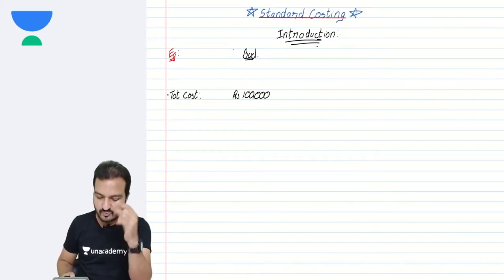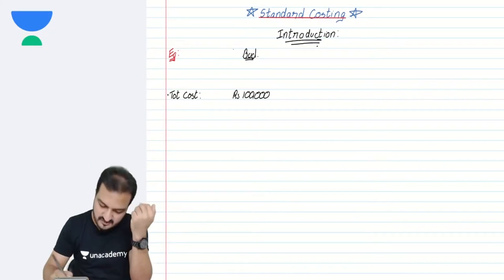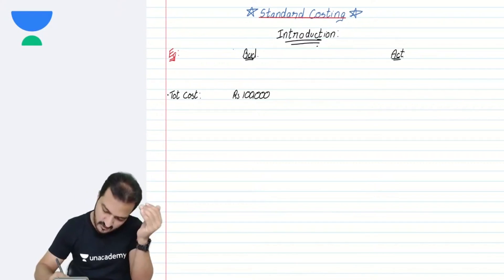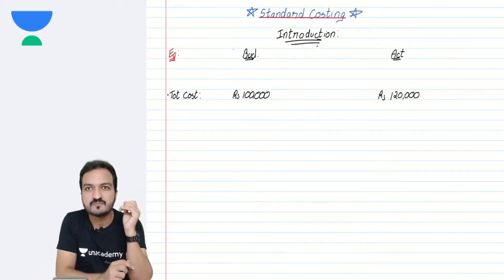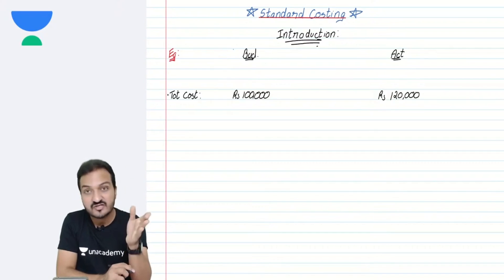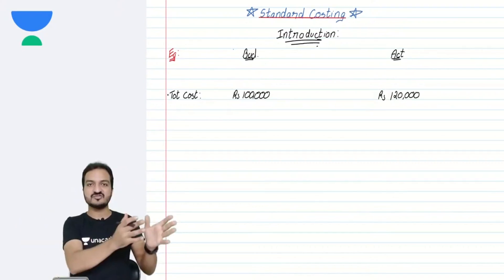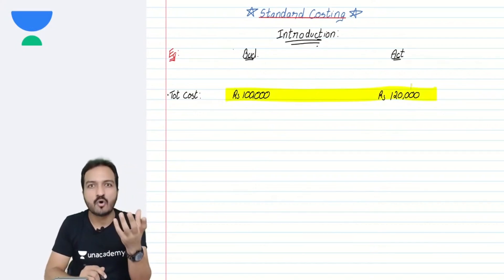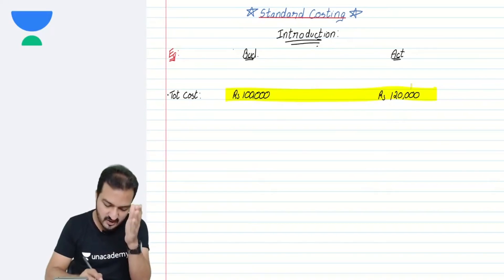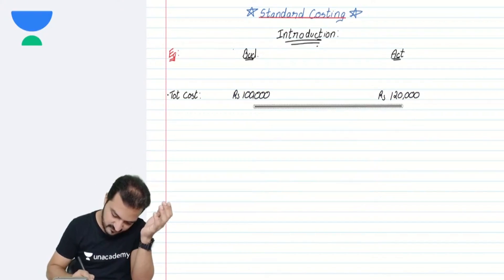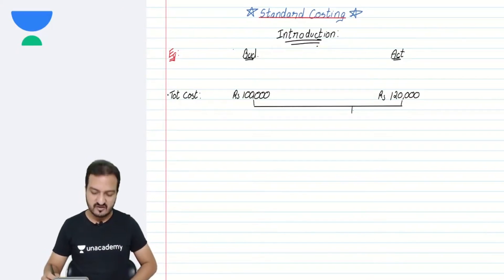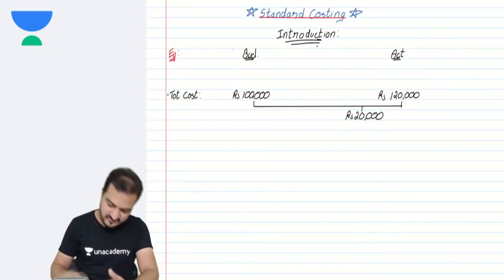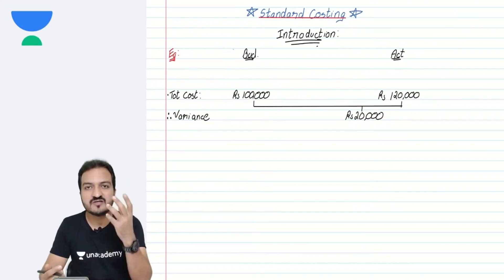It is not necessary that the actual turns out to be exactly the same. It is possible that the actual cost found out by the end of the year turned out to be rupees 1 lakh 20,000. If the actual cost turns out to be 1 lakh 20,000, is this good or bad? It seems a little bad for the company, because I was supposed to spend 1 lakh but actually spent 1 lakh 20,000 — extra cost of 20,000. This extra cost of 20,000 is called a variance.